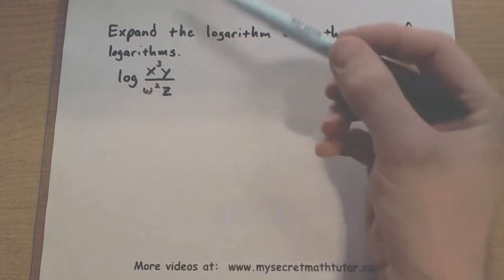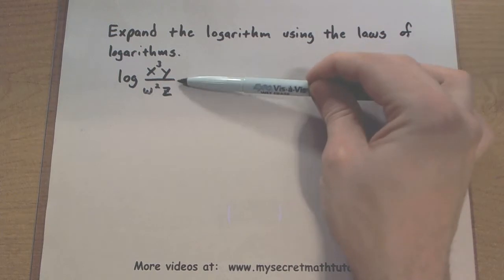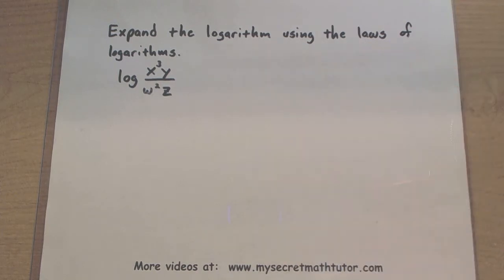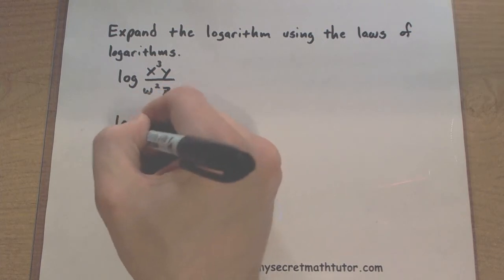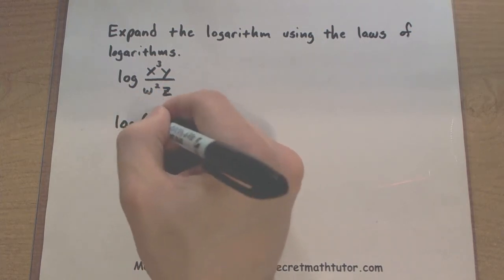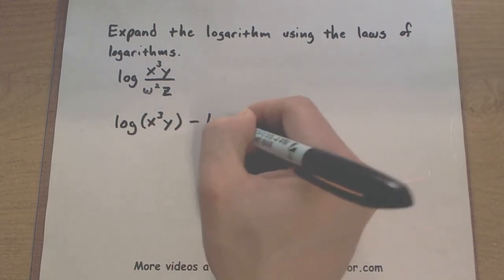As we start to use these rules we want to recognize what features are inside the log. One of the largest features I see right now is this divide sign right here. So when you have division inside of a logarithm you can split this up into two other logs such that these logs are being subtracted.